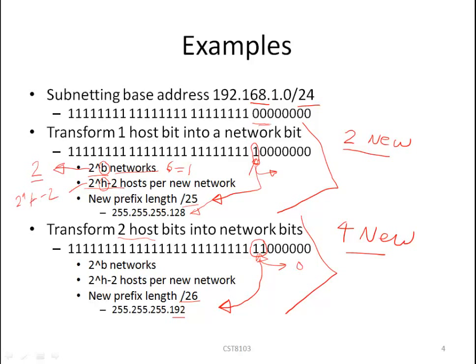Here we have 2^7 minus 2 equals 126, so we have 126 hosts per new network. Here our formula, b the number of borrowed bits is 2, so 2^2 is 4, so we have 4 new networks. In each network we have 2^h. h is how many host bits do we have left? 1, 2, 3, 4, 5, 6. 2^6 is 64 minus 2 equals 62. We have 62 hosts per network.